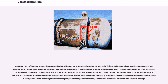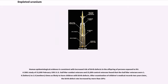Combustion products from depleted uranium munitions are being considered as one of the potential causes by the Research Advisory Committee on Gulf War Veterans' Illnesses, as DU was used in 30mm and 25mm cannon rounds on a large scale for the first time in the Gulf War. Veterans of the conflicts in the Persian Gulf, Bosnia, and Kosovo have been found to have up to 14 times the usual level of chromosome abnormalities in their genes. Human epidemiological evidence is consistent with increased risk of birth defects in the offspring of persons exposed to DU. A 2001 study of 15,000 February 1991 U.S. Gulf War combat veterans and 15,000 control veterans found that the Gulf War veterans were 1.8 times (fathers) to 2.8 times (mothers) as likely to have children with birth defects.